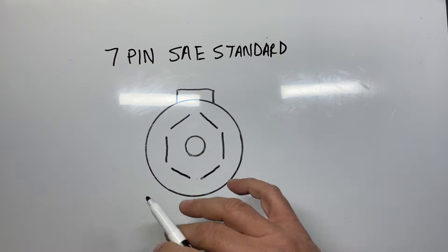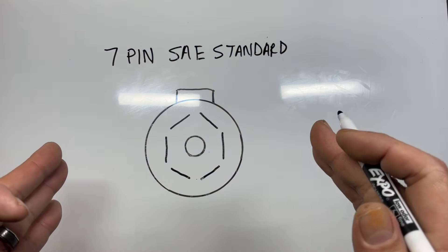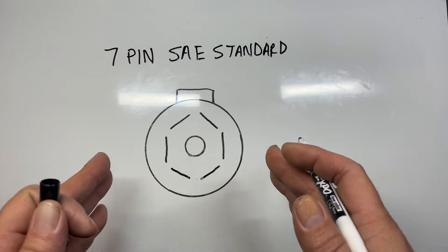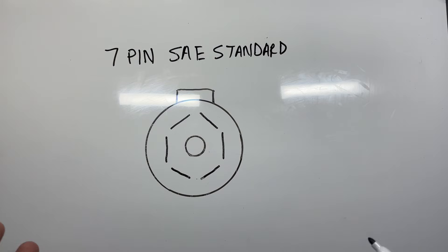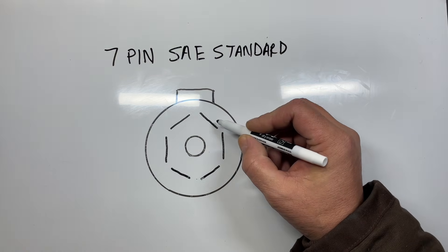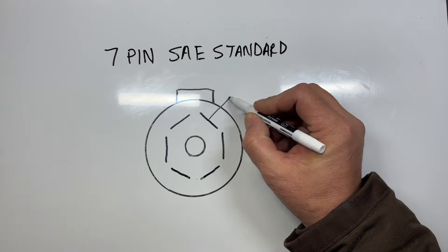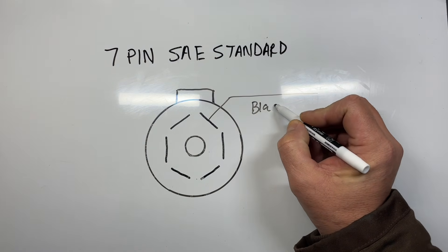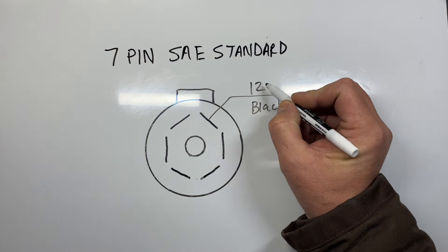The first thing that we're going to be looking at—keep in mind this is looking either at the truck or looking at the inside of the cable on the trailer. On your top right, your first position in your clock is going to be black and it's going to be your 12-volt positive. This is where it gets power.